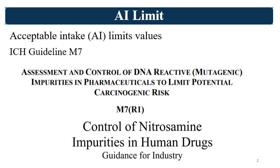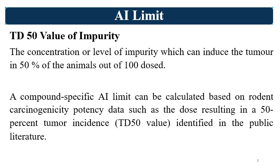The first key terminology is Acceptable Intake, that is the AI limit or AI limit values for Nitrosamine Impurities. The basic guideline for Nitrosamine or Mutagenic Impurities is ICH guideline M7 — Assessment and Control of DNA Reactive or Mutagenic Impurities in Pharmaceuticals to Limit Potential Carcinogenic Risk. The second is the US FDA guideline: Control of Nitrosamine Impurities in Human Drugs. EMA and Anvisa guidelines also exist, and country-specific regulatory body guidelines are available. I have referred to these two guidelines for the information in this video.